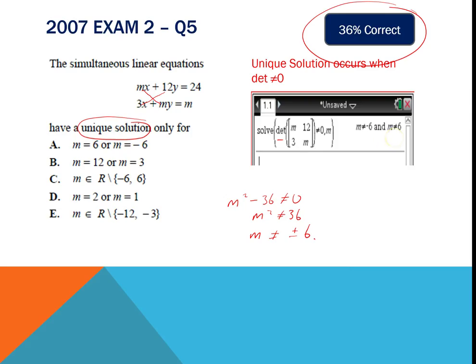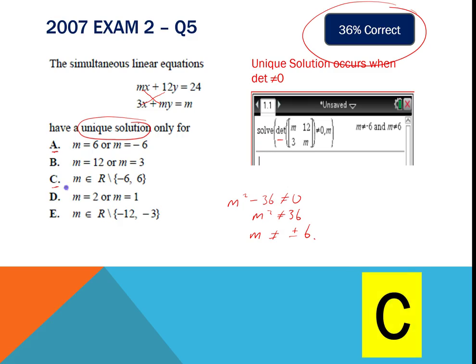Once you've got that answer — that M can't equal plus or minus 6 — you need to find the correct answer. The choice is between A or C, and you need to understand the notation. We don't want M to be 6 or negative 6, so we actually want C: any real number except for those two values.